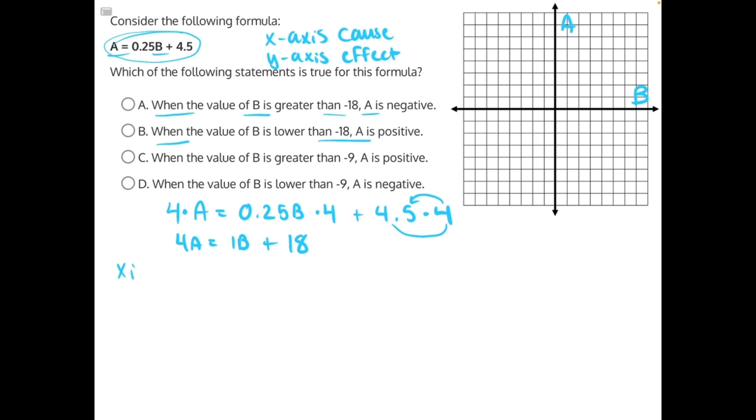Now we can find our x-intercept, which is when y equals 0, or when A equals 0. So 4 times 0 instead of 4 times A equals 1B plus 18. Four times 0 will just give us 0 equals 1B plus 18. Then we'll need to do opposite operations and subtract 18 from both sides, which will give us negative 18 equals B.